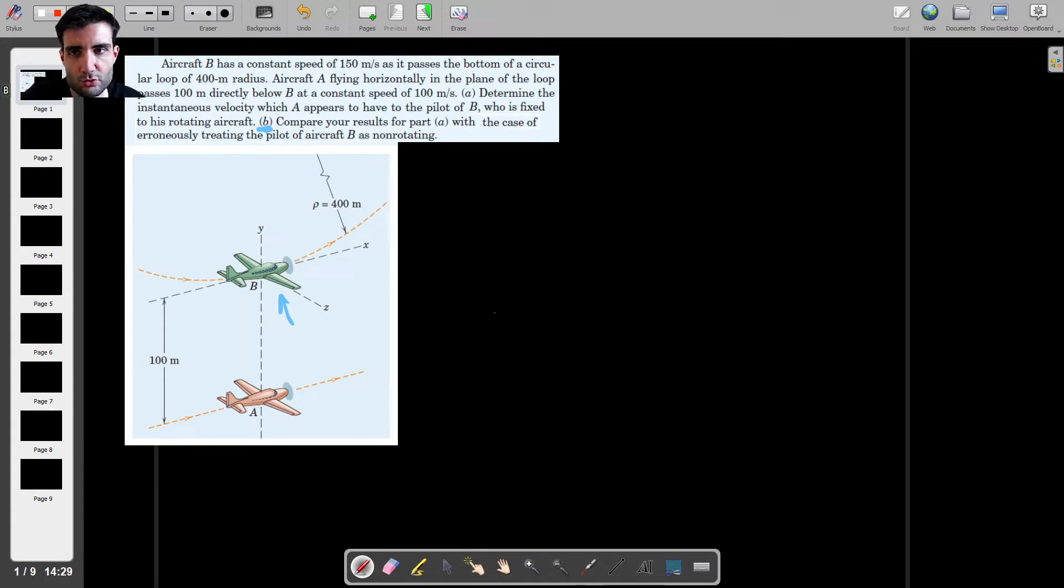For now, let's try to do part A. So the first thing I would do is find what the angular velocity is, and we can find that pretty easily. So the angular velocity is the velocity of the aircraft, or the speed of the aircraft, divided by the radius of curvature, which is constant, which gives us 150 divided by 400.